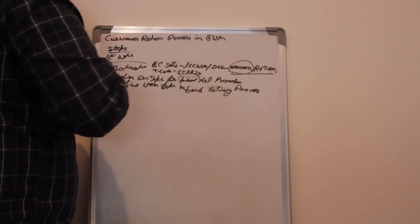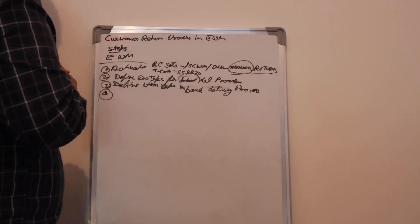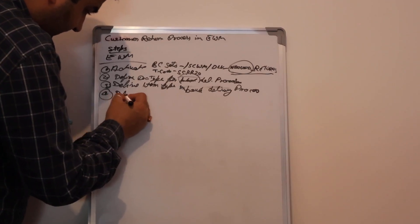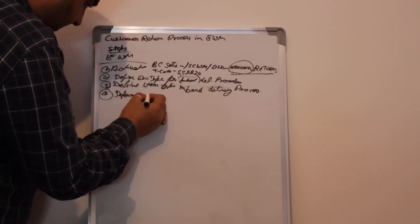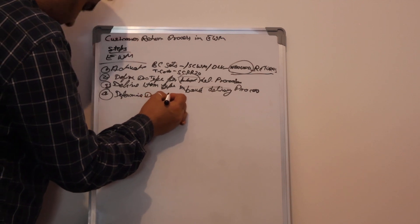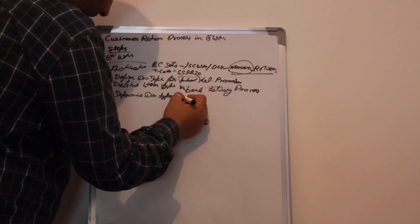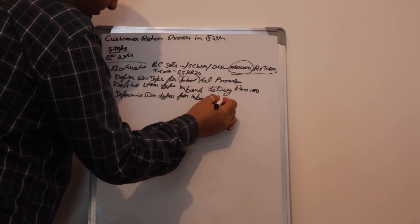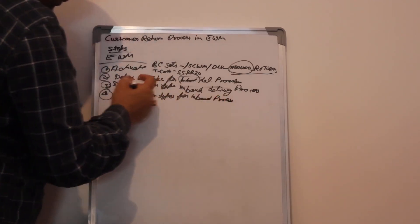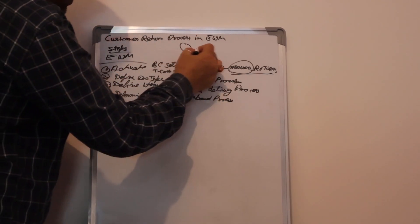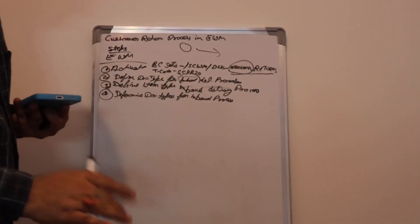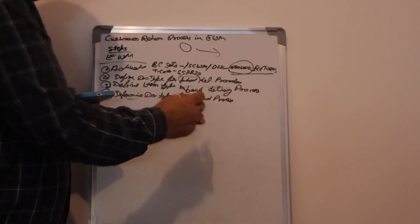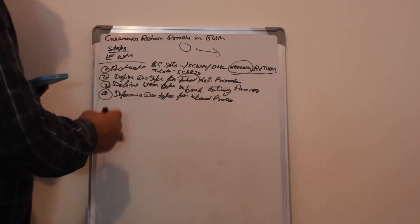Fourth point: we need to determine document types. Define means something you create — determine means you are going to implement it. Determination means you are going to implement. Fifth step follows.